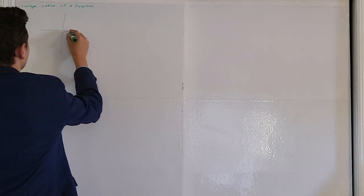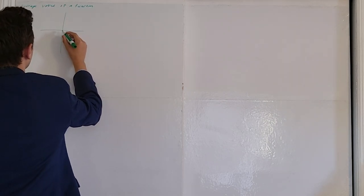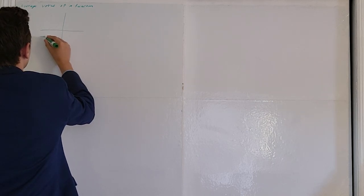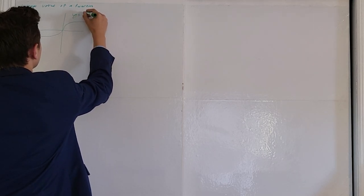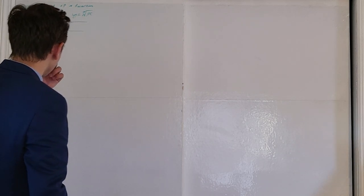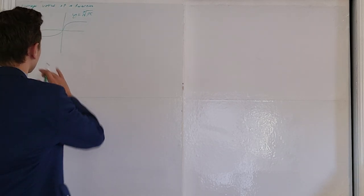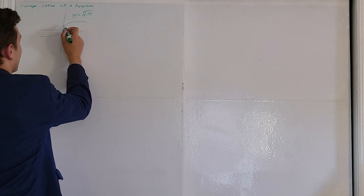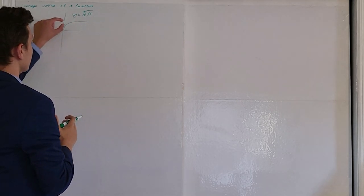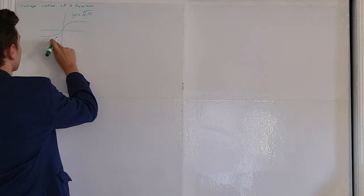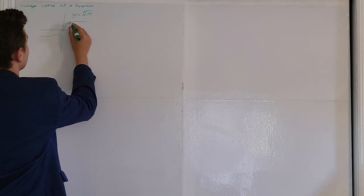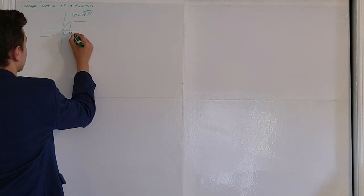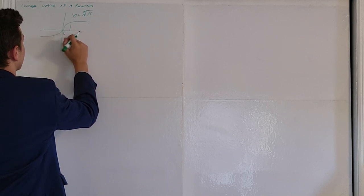Let's say I've got a curve that looks like y equals the cube root of x. We're interested in calculating the average value — the average y value, the average height — of the function from x equals 1 to x equals 8. That's not an infinity sign, that's a sideways 8.